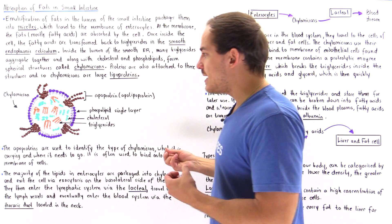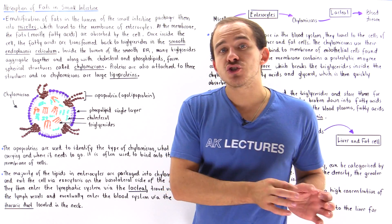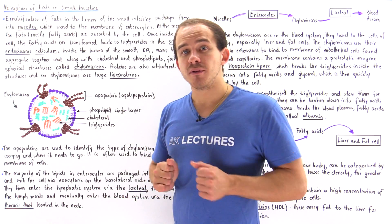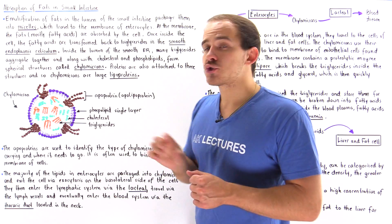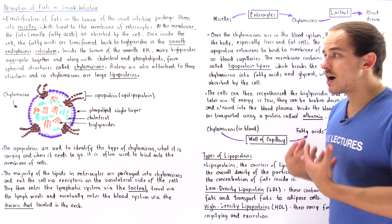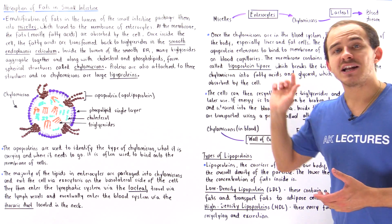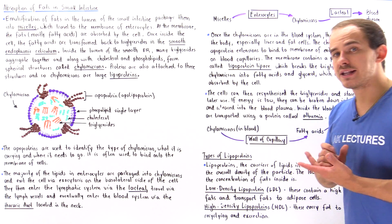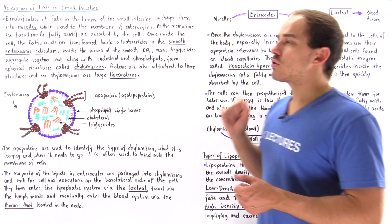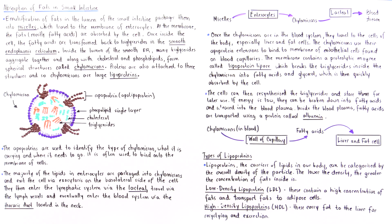The chylomicron, before going into our blood system, first travels through our lymph vessels, and this is in contrast to amino acids and sugars that go directly into our blood system via our enterocytes in the small intestine.